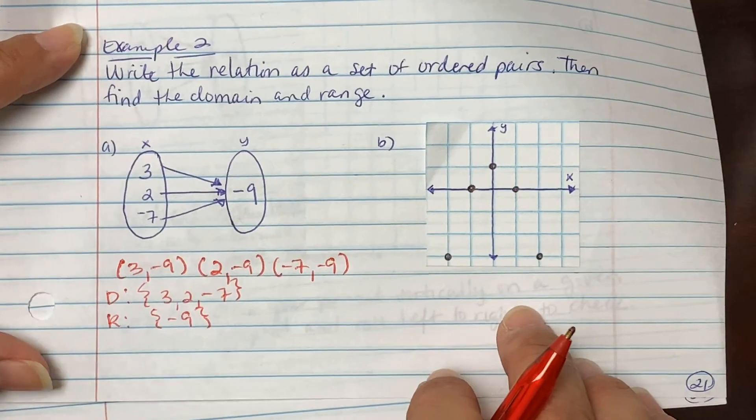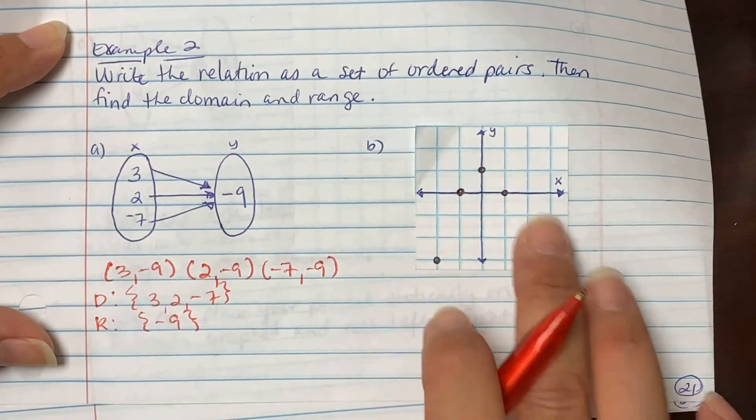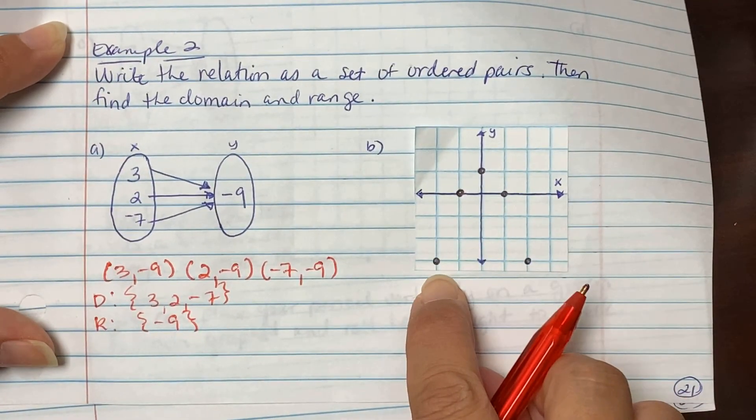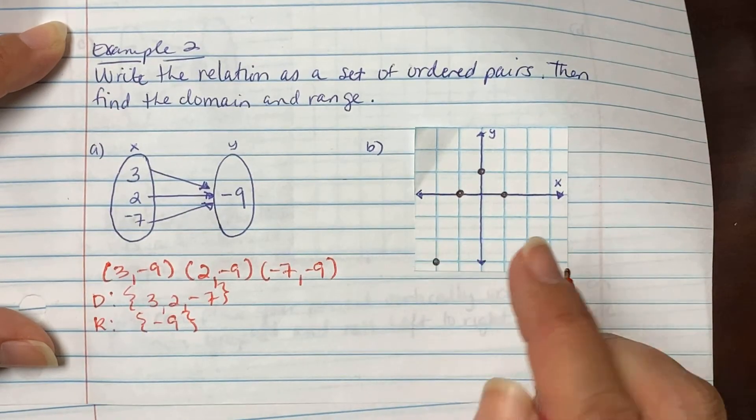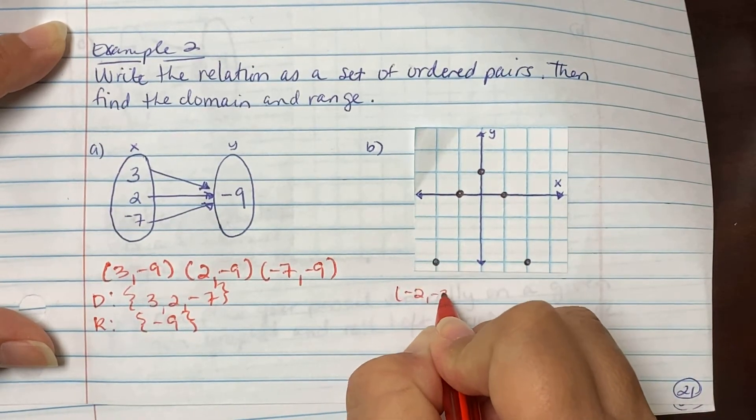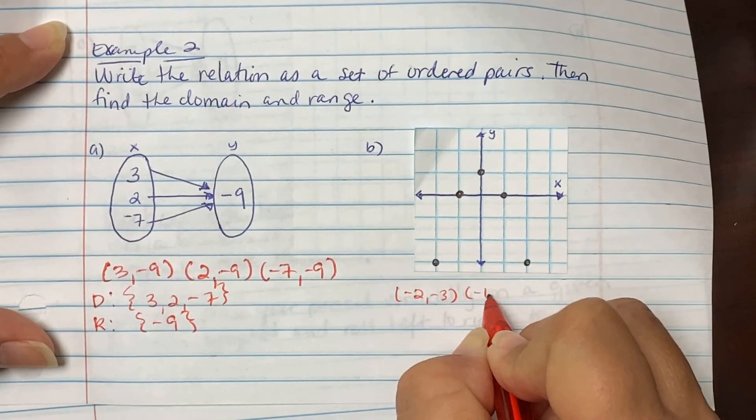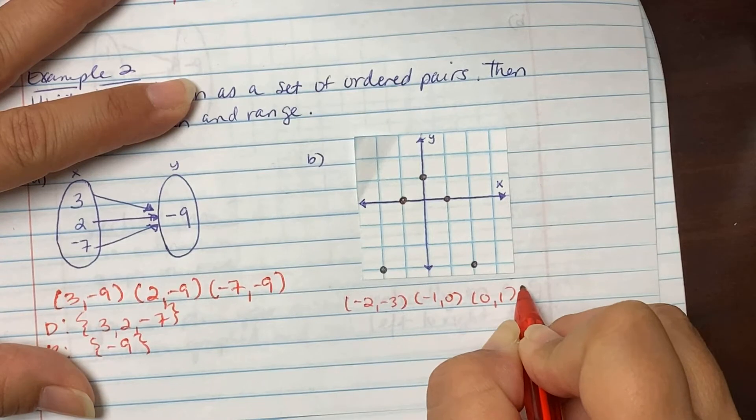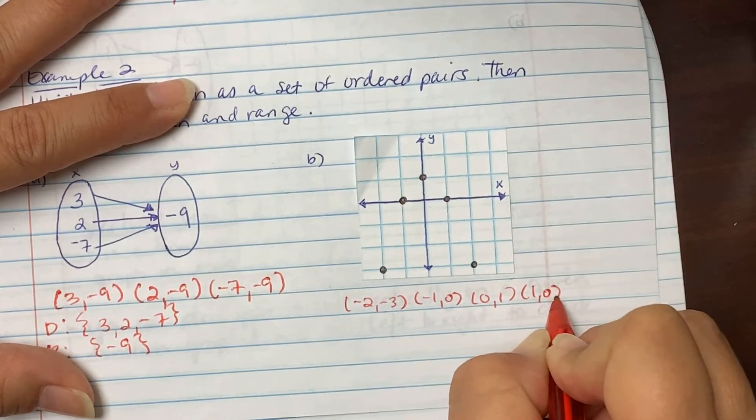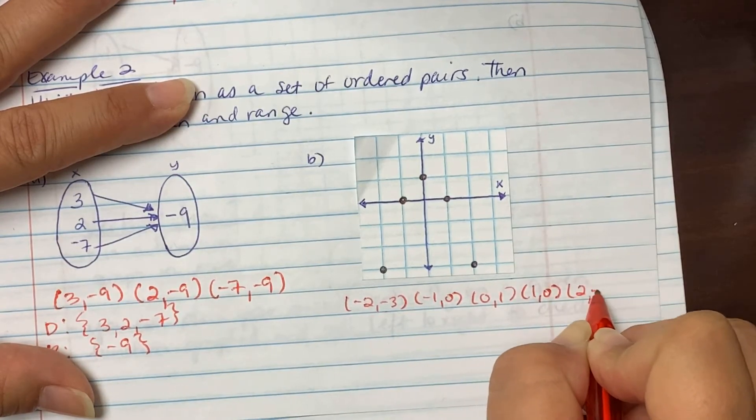When they give it to you in graph form, find your ordered points. The first order point on the left is (-2, -3). Then we're at (-1, 0), (0, 1), (1, 0), and (2, -3).